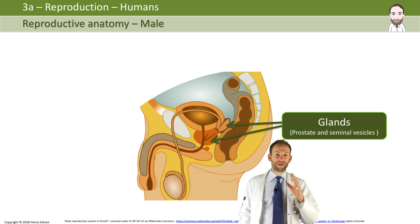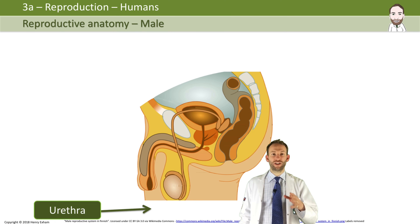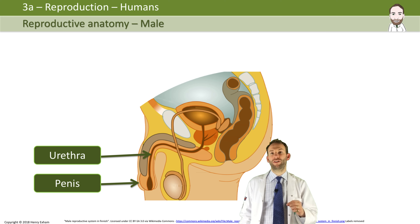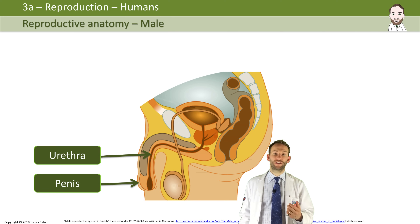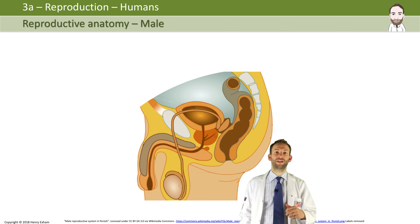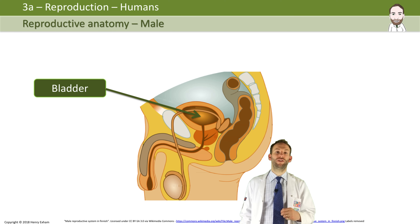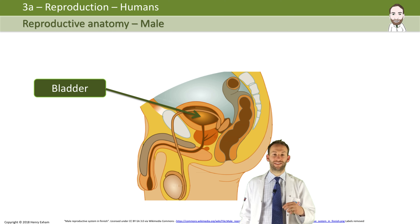Looking at the penis in more detail, you've got the urethra, which is the tube that comes out of the penis. The urethra has two functions: urine will come out of the urethra from the bladder, but also semen will come out of the urethra during ejaculation and sexual intercourse.